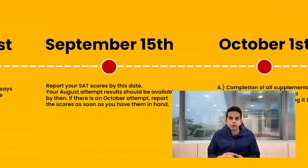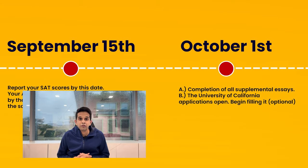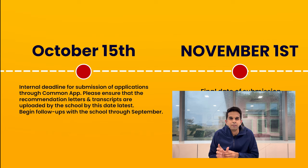By the 15th of September at least, you need to report your SAT scores to all the universities you've decided to apply to. Understand that SAT scores may take anywhere between 7 to 14 days to reach the university, so pushing it right until deadline day is not wise. If you report by September 15th, all your scores will reach all your universities well before the deadline. By the 1st of October, you need to finish all your supplementary essays. The remaining 15 days until October 15th should only be used as a buffer to polish your application or finish anything you may have missed.